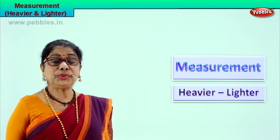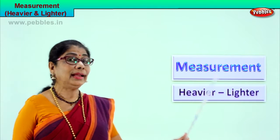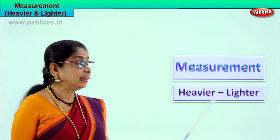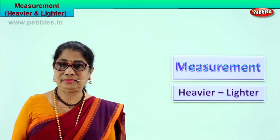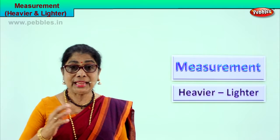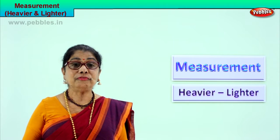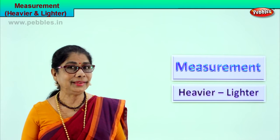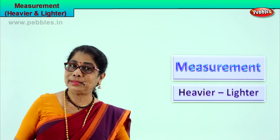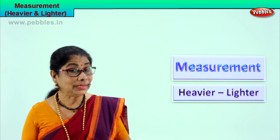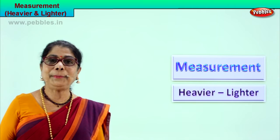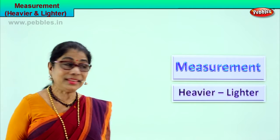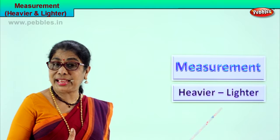Hi children! Today we are trying to understand two measurements: heavier and lighter. When you take from the garden a stone that is very heavy, and if you have a paper in the hand, then you say the stone is heavier than the paper. A stone is heavier than the leaves.